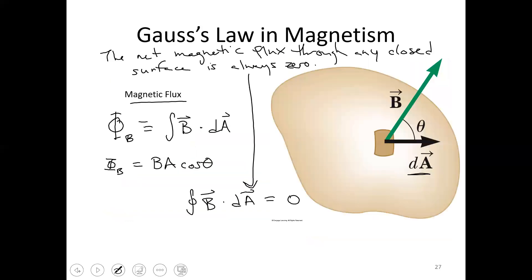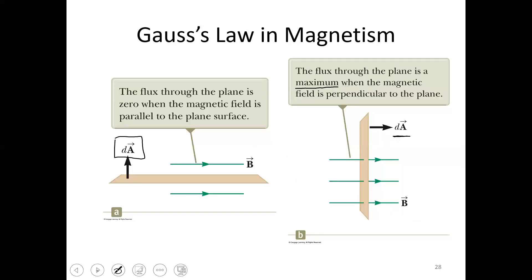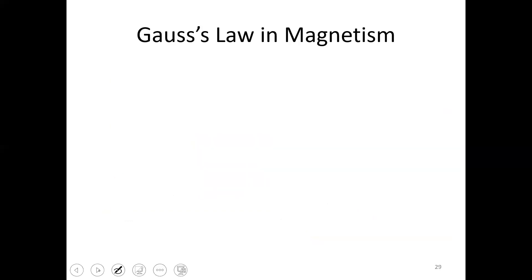In contrast, image B shows flux is maximum when the magnetic field is perpendicular to the plane of the area — in other words, when it is in the same direction as the normal to the area. The dot product B·A is maximized in this configuration. The lecture will pause here and return with more topics on magnetism and the magnetic moment of ions for the final lecture of this chapter.